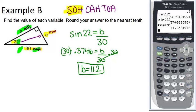So that means I'm going to need a cosine equation. Cosine of 22 is adjacent over hypotenuse. So that's A over 30. Now again, go over to my calculator so it can help me out and tell me the cosine of 22.